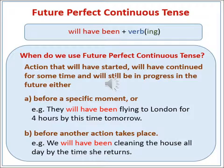Moving on to the last perfect continuous tense — Future Perfect Continuous Tense. This tense is used to express an action that will have started or will have continued for some time and will still be in progress in the future, either before a specific moment or before another action takes place. For example: 'They will have been flying to London for four hours by this time tomorrow.' Another example: 'We will have been cleaning the house all day by the time she returns.' In both sentences, future time reference is given with the words 'for' and 'all day.'